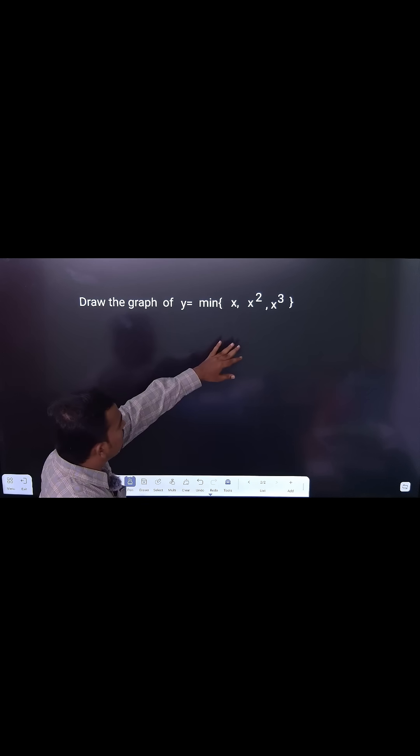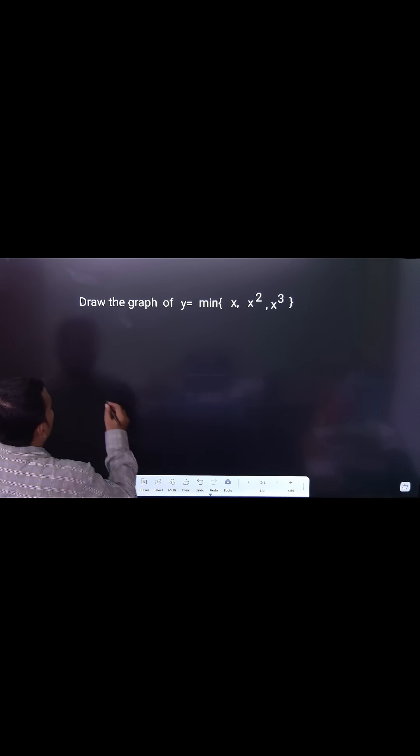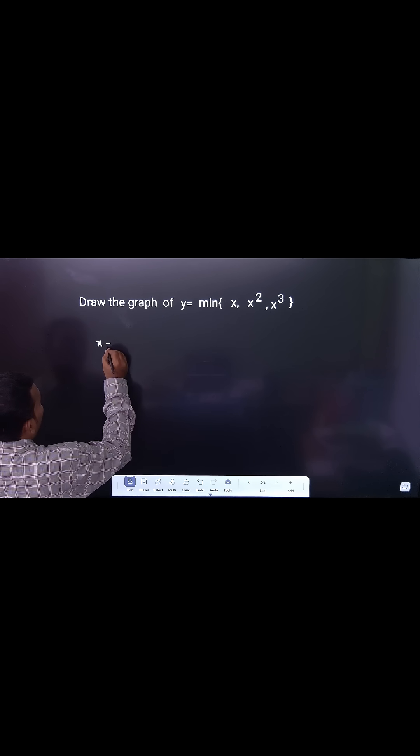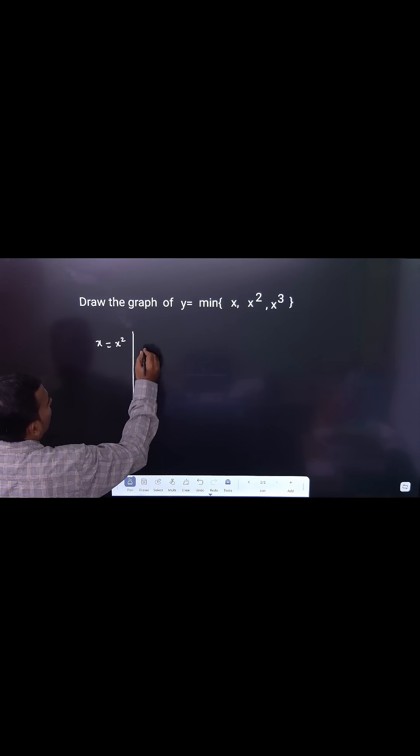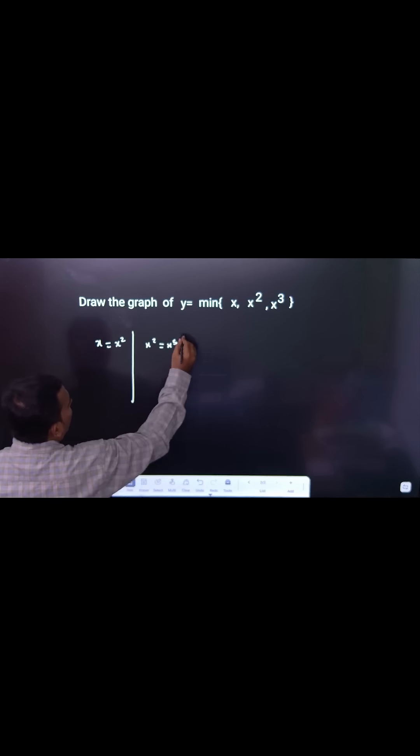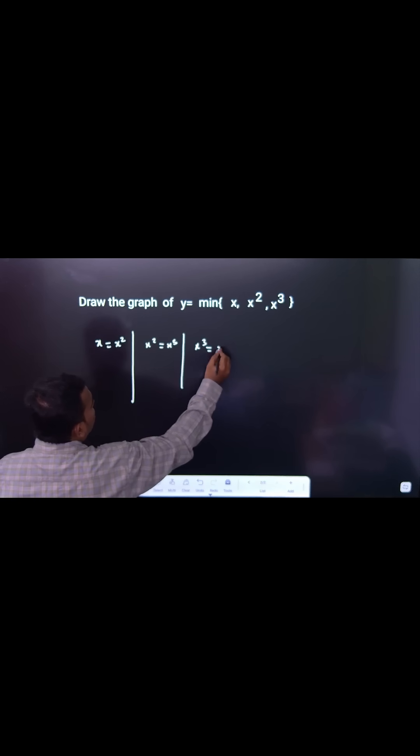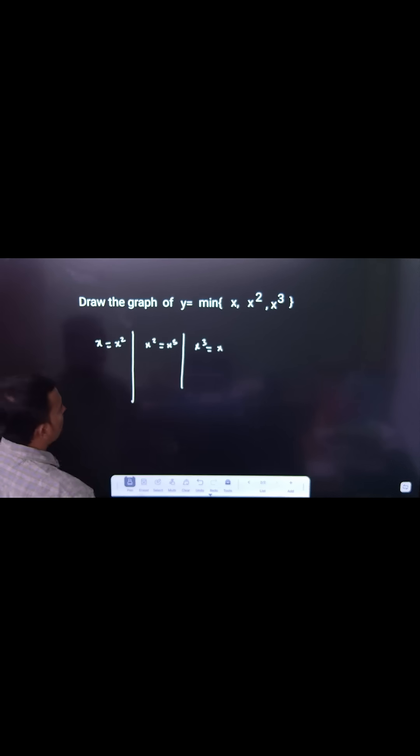To draw the graph of minimum of x, x square, x cube. First, what you can do? First, equate all the combinations: x square is equal to x, x square is equal to x cube, and x cube is equal to x. Where these graphs are intersecting, you have to find out.